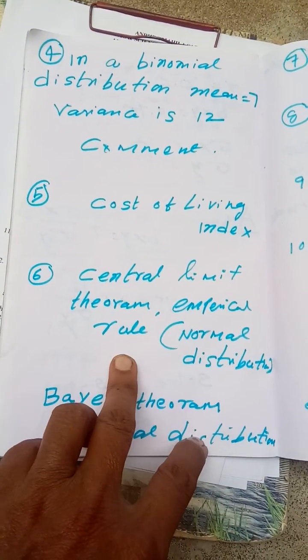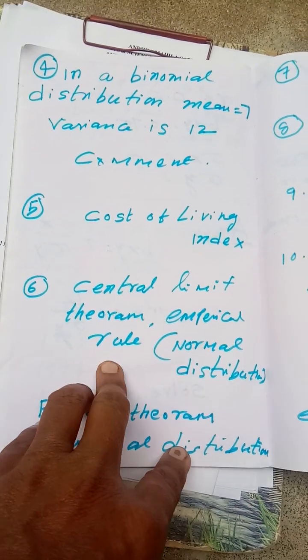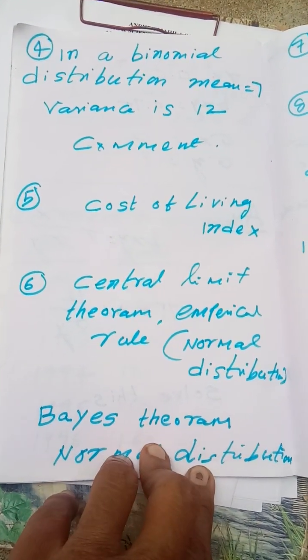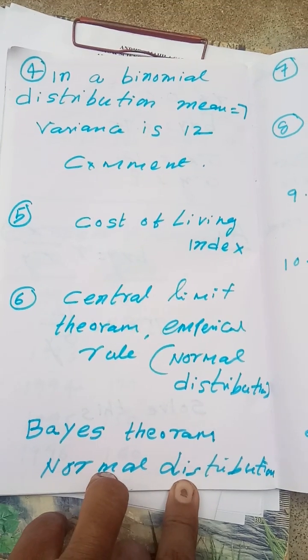We can find cost of living index, problem may come. Central limit theorem, this is in normal distribution.